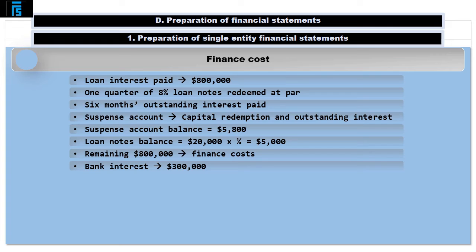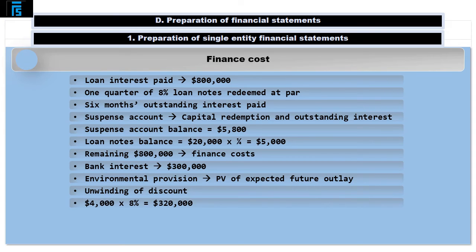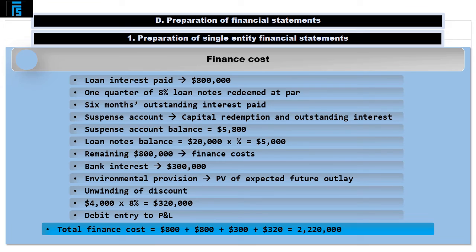To this, we add the $300 of bank interest, which, being a debit balance, is clearly an item of expense. We also need to consider the information in note 3 concerning the environmental provisions set up in respect of Clarion's property, plant and equipment. The provision is carried at the present value of the expected future outlay and therefore requires annual updating to account for the unwinding of discount. This is done by applying the discount rate provided in the note, 8%, to the opening balance of the provision account, $4,000. The product is $320, and this is the amount by which the environmental provision should grow over the course of the year, with a corresponding debit entry recorded in P&L. When all three expense items are considered, the overall finance cost comes in at $2,220.